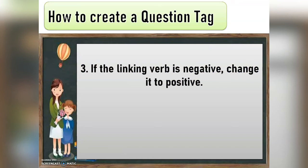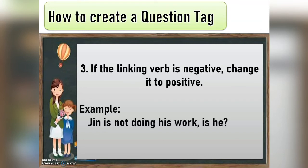If the linking verb is negative, change it to positive. This is like the opposite of the first way to create a question tag. Example: 'Gene is not doing his work. Is he?' As you can see, the linking verb is negative, which is 'is not.' That's why we change it to positive. And just like the second rule, we have to change the subject into its pronoun form.